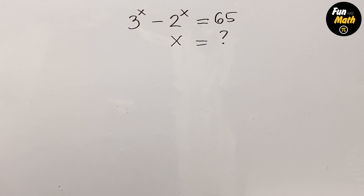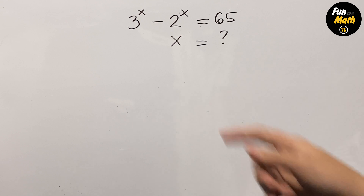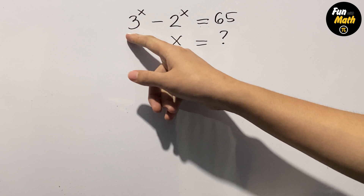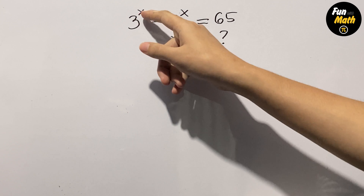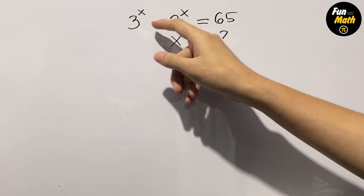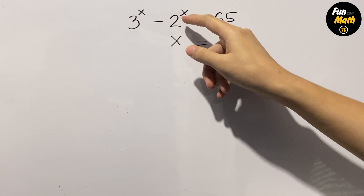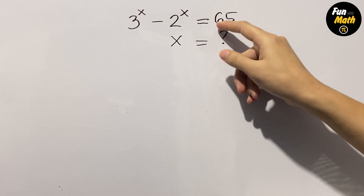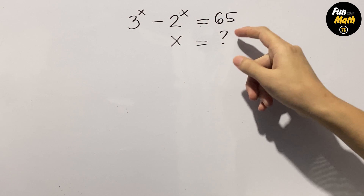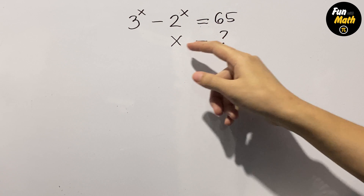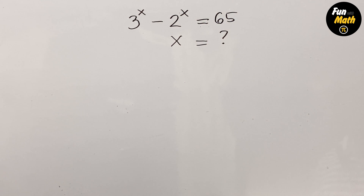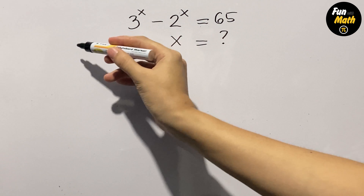Hello, welcome again to Fun with Maths. Here's another exponential problem: 3 to the power of x minus 2 to the power of x is equal to 65. Solve for x. Here's the solution.